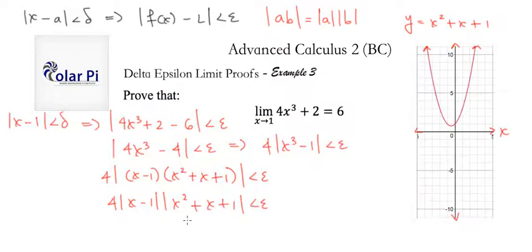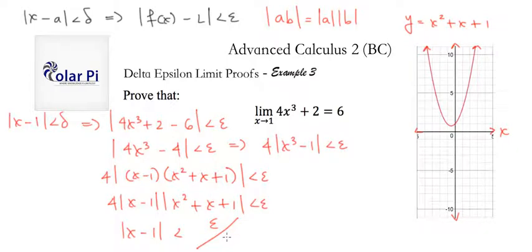Using that, we could write 4 times absolute value of x minus 1 times absolute value of x squared plus x plus 1 is less than epsilon. The absolute values around x squared plus x plus 1 are unnecessary because, as you can see, x squared plus x plus 1 is always positive — but we'll keep them. Next, we can write absolute value of x minus 1 is less than epsilon divided by 4 times absolute value of x squared plus x plus 1, by dividing both sides.